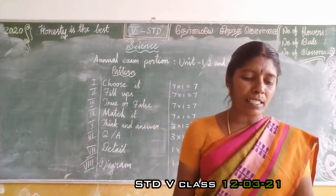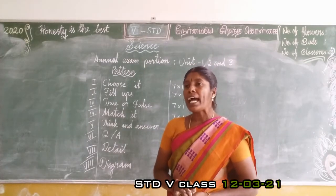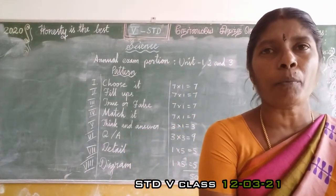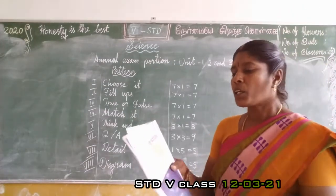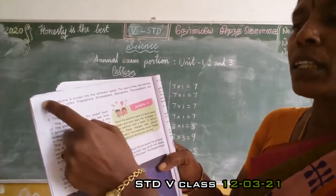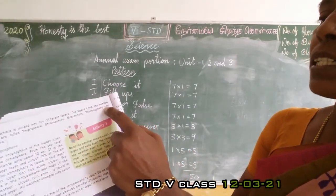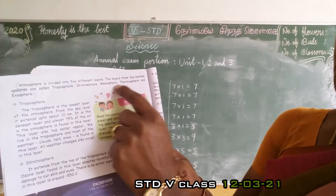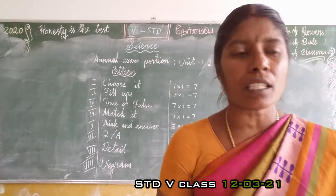Answer in brief: What are the different layers of atmosphere? Atmosphere is divided into 5 layers. The layers are troposphere, stratosphere, mesosphere, thermosphere, and exosphere. When writing the layers, use a capital letter for the first letter.